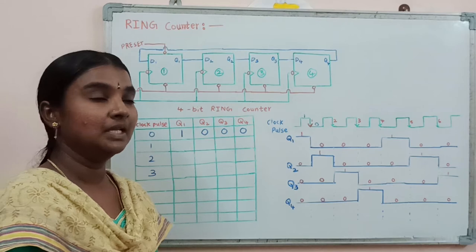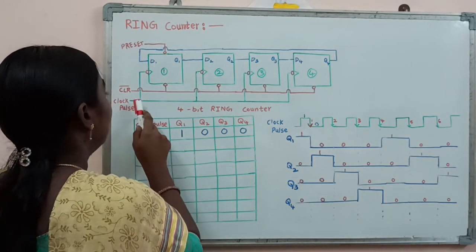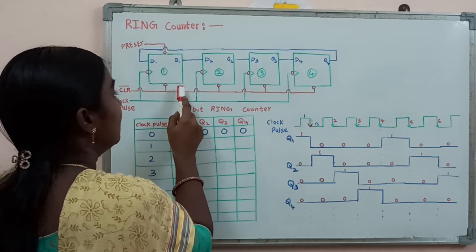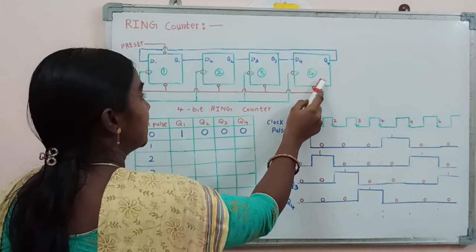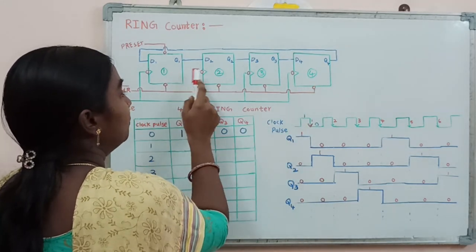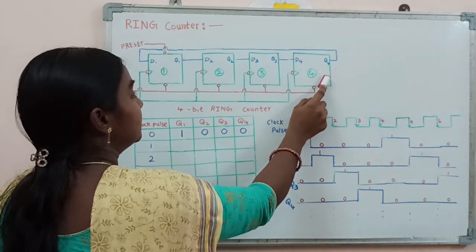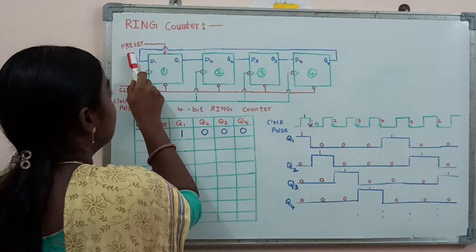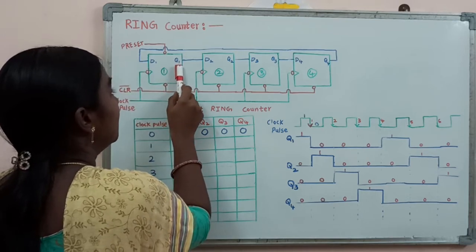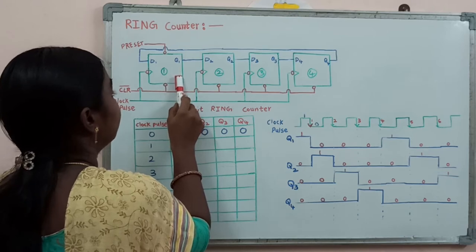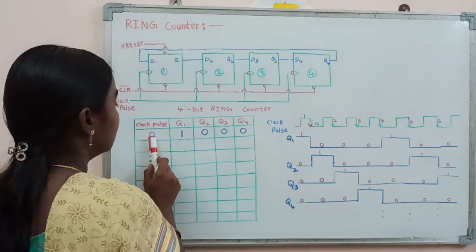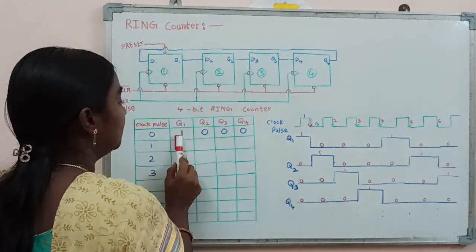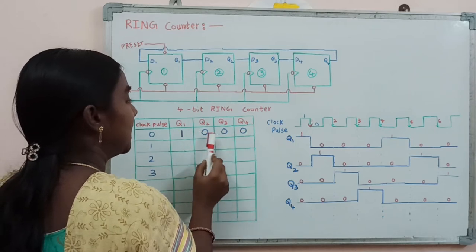Before giving the clock pulse, we have to apply the clear input pin first. By this clear pin we make the outputs of all four flip flops — Q1, Q2, Q3, and Q4 — equal to zero. Next, the preset input pin makes the first flip flop output Q1 equal to one. So before applying any clock pulse, Q1 is 1 and Q2, Q3, Q4 are all zero.